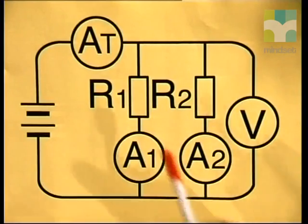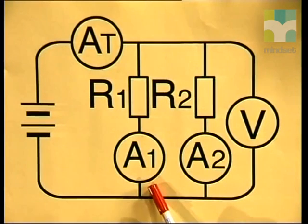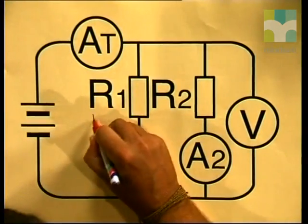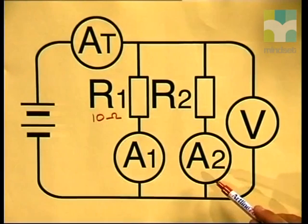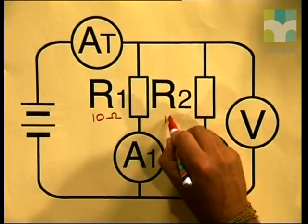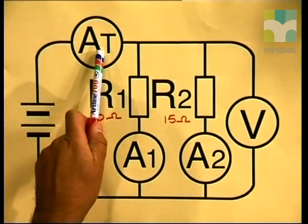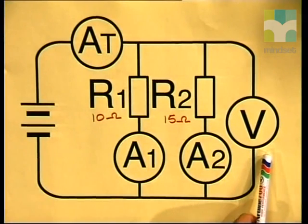In this diagram, the resistors are placed alongside each other, that is parallel to each other. Ammeter A1 measures the current through resistor R1, which has the lower resistance of 10 ohms, while Ammeter A2 measures the current through R2, which has the higher resistance of 15 ohms. AT measures the total current supplied by the battery, and the voltmeter measures the total potential difference across the resistors.